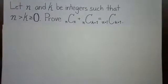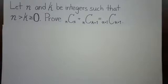Hello, my name is Yadira Rivera and I'm going to be solving a problem from my discrete structures class. The problem is: let n and k be integers such that n is greater than k is greater than or equal to zero. Prove that n combination k plus n combination k plus one is equal to n plus one combination k plus one.